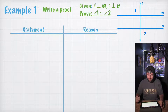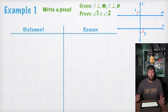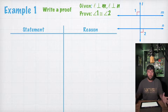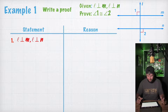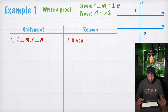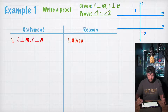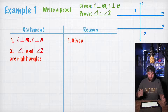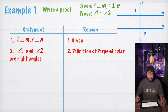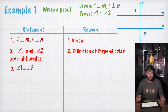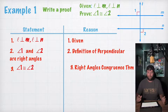So they want us to write a proof. Given line L is perpendicular to line M and line L is perpendicular to line N, they want us to prove that angle 1 is congruent to angle 2. So the first thing, like we do in most of our proofs, let's go ahead and write down our given information. L is perpendicular to line M and L is perpendicular to line N, and the reason is it's given. Now, we know that if two lines are perpendicular, they're going to form right angles. So angle 1 and angle 2 are right angles because of the definition of perpendicular — if something is perpendicular, it means it intersects to form right angles. Now we just learned this theorem, so we could say that angle 1 and angle 2 are congruent because of the right angles congruence theorem.